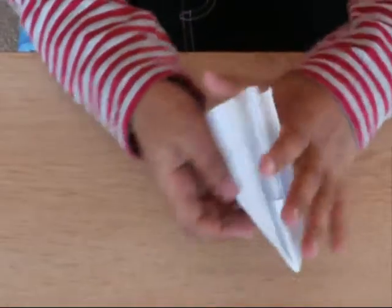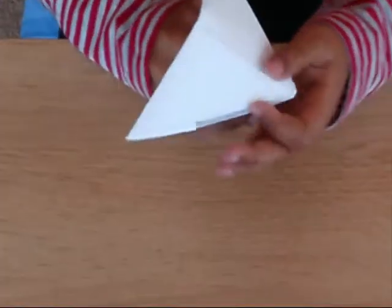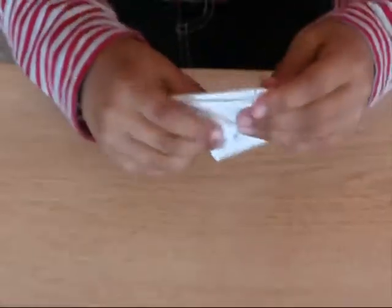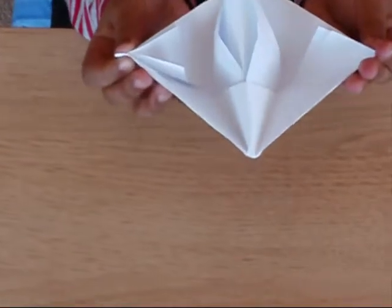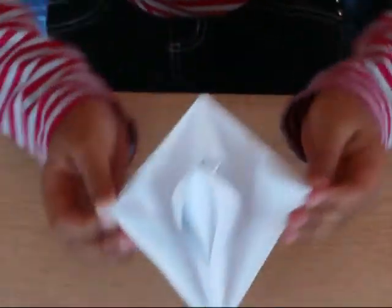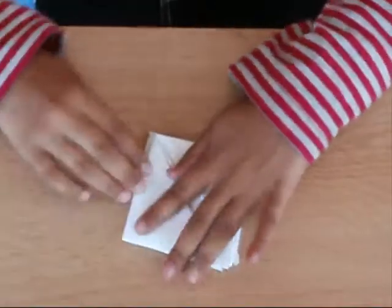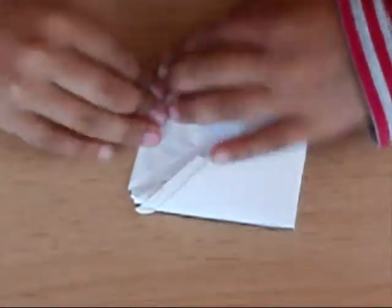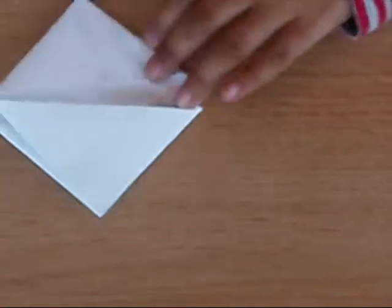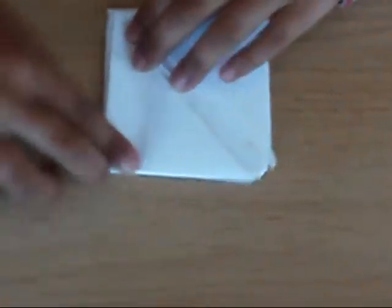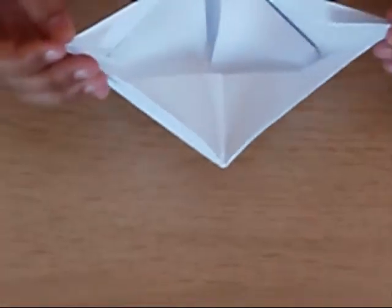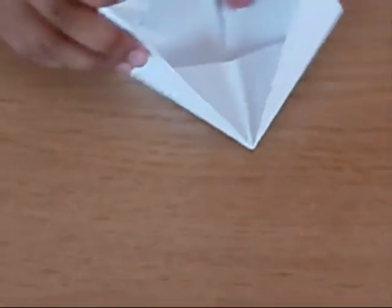And then we'll do exactly the same as before. We put our finger in, we twist and we squash. So make sure we crease it well. If that happens, it means you need to crease it really well. And then we shall open it again. And there you have it.